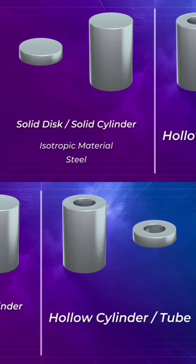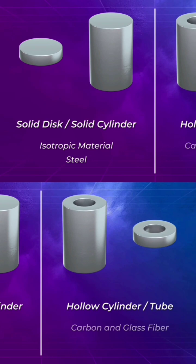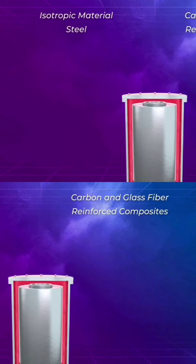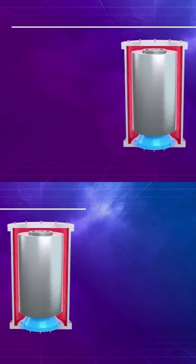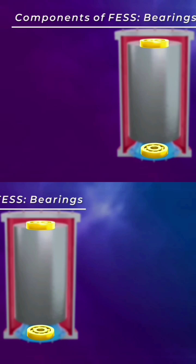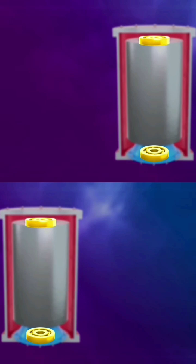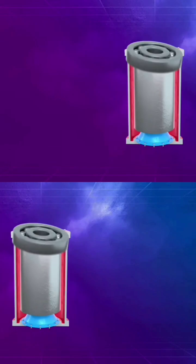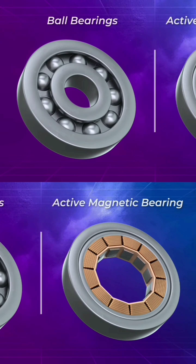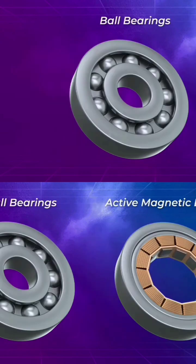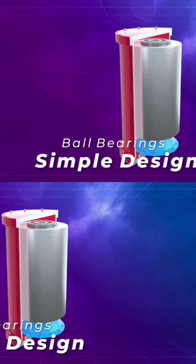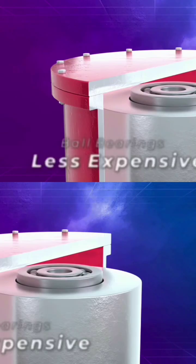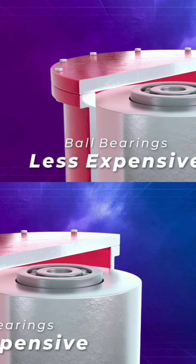Bearings support the flywheel rotor while allowing it to spin at high velocities. Ball bearings and active magnetic bearings are the two most common bearing types used in flywheel systems. Ball bearings are a simpler, more common, and less expensive alternative.